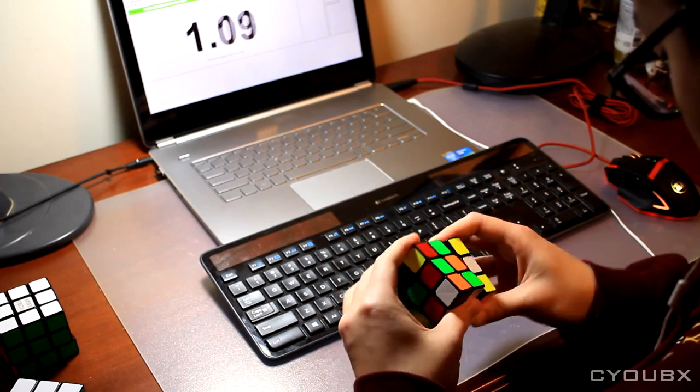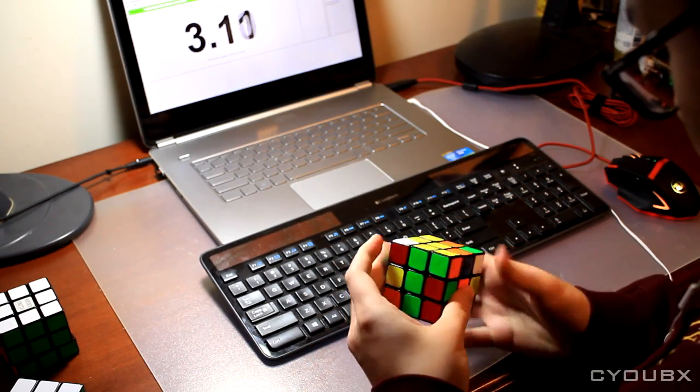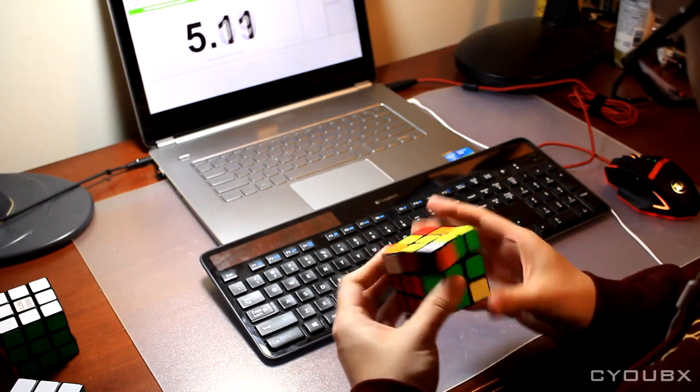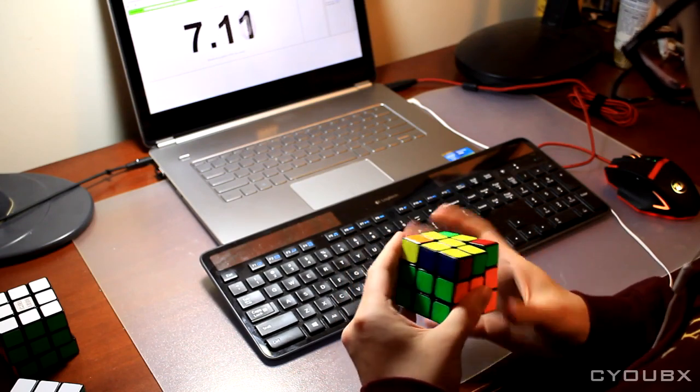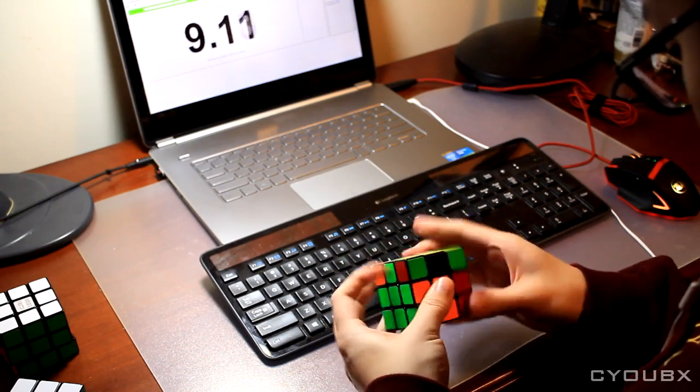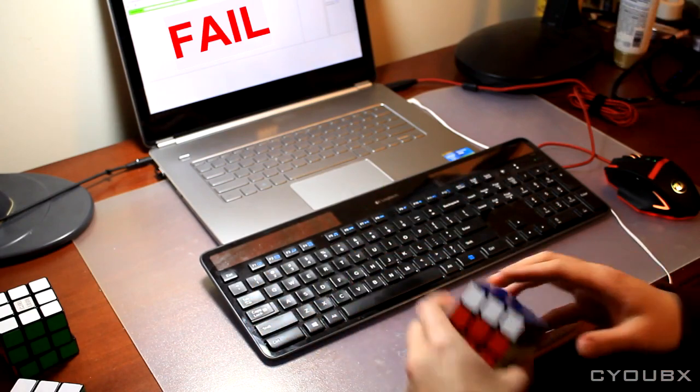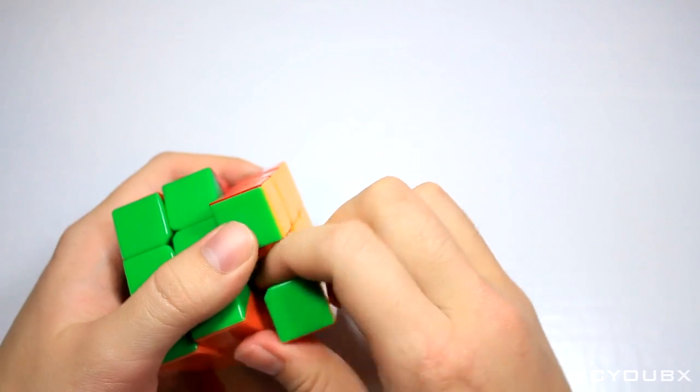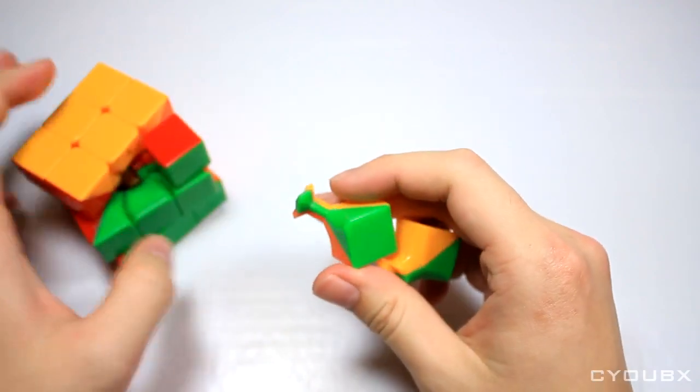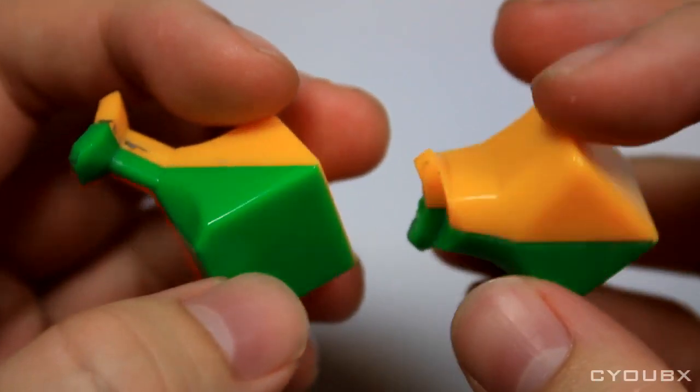The Gu Hong was really the first cube that could corner cut to such extremes. With previous mechanisms, such as with Type As, cubes could only corner cut a single cubie, and certain mods allowed for the smallest amounts of reverse corner cutting. A lot of people don't know this, but even though the Gu Hong was able to break both barriers, the mechanism itself was already done before.